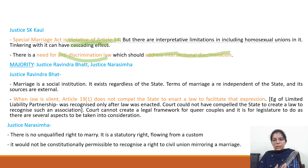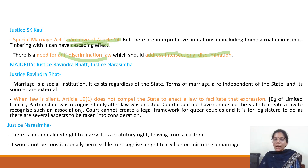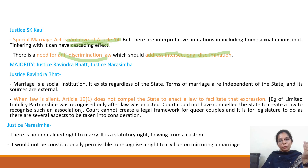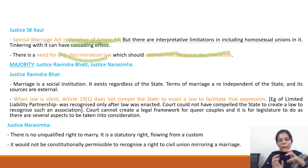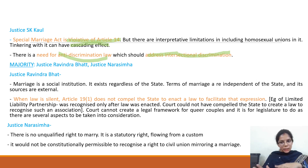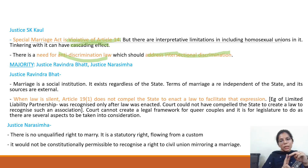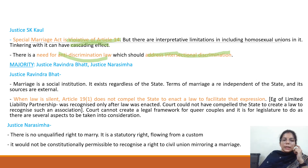The majority opinion was formed by Justice Ravendra Bhat, Justice Narasimha, and Justice Hema Koli. There are different opinions given by different judges, but the important aspect is that all of them agreed that there is no right to even form a civil union under Article 19 — it does not recognize such a right. Moreover, there is no unqualified right to marry.